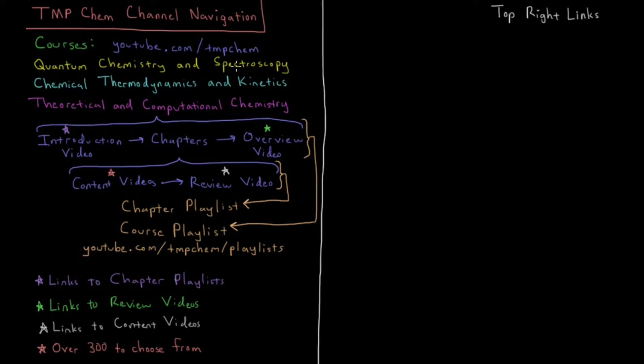Quantum Chemistry and Spectroscopy has 14 chapters and 177 videos. Chemical Thermodynamics and Kinetics has 15 chapters and 147 videos.